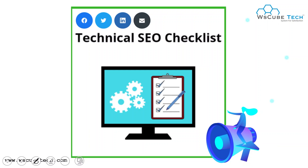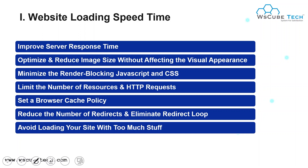Now let's move to the technical SEO checklist — the activities we cover in our technical SEO part. This checklist is divided into four main parts. The first is website loading speed and time. In this, we work on improving server response time, optimizing and reducing image size without affecting visual quality, minimizing render-blocking JavaScript and CSS, limiting HTTP requests, setting up browser cache policy, reducing redirects, and eliminating redirect loops.